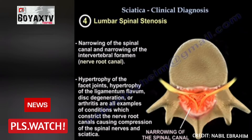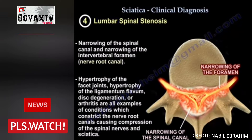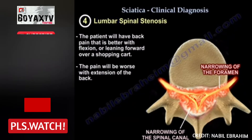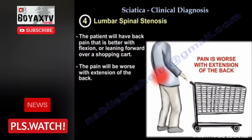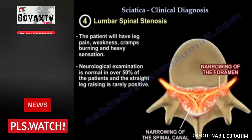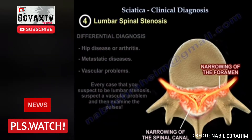The fourth cause is spinal stenosis — narrowing of the spinal canal and the foramen due to enlarged and hypertrophied facet joints, hypertrophy of the ligamentum flavum, disc degeneration, and spinal arthritis. These all cause pressure on the nerve roots and sciatica. The patient will have back pain that is better with flexion or leaning forward, and worse with extension. There may be leg pain, weakness, cramps, burning, and a heavy sensation. Neurological exam is normal in over 50% of patients, and the straight leg raise is rarely positive.